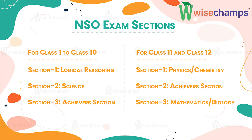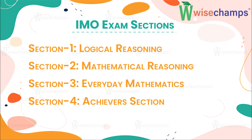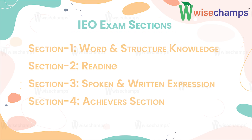Those participating in Olympiad exams should be aware of the exam sections. For NSO, from class 1 to class 10: Section 1 is Logical Reasoning, Section 2 is Science, and Section 3 is Achievers Section. For class 11th and 12th: Section 1 is Physics or Chemistry, Section 2 is Achievers Section, and Section 3 is Mathematics or Biology. For NCO: Section 1 is Logical Reasoning, Section 2 is Computers and Information Technology, Section 3 is Achievers Section. For IMO: Section 1 is Logical Reasoning, Section 2 is Mathematical Reasoning, Section 3 is Everyday Mathematics, and Section 4 is Achievers Section.